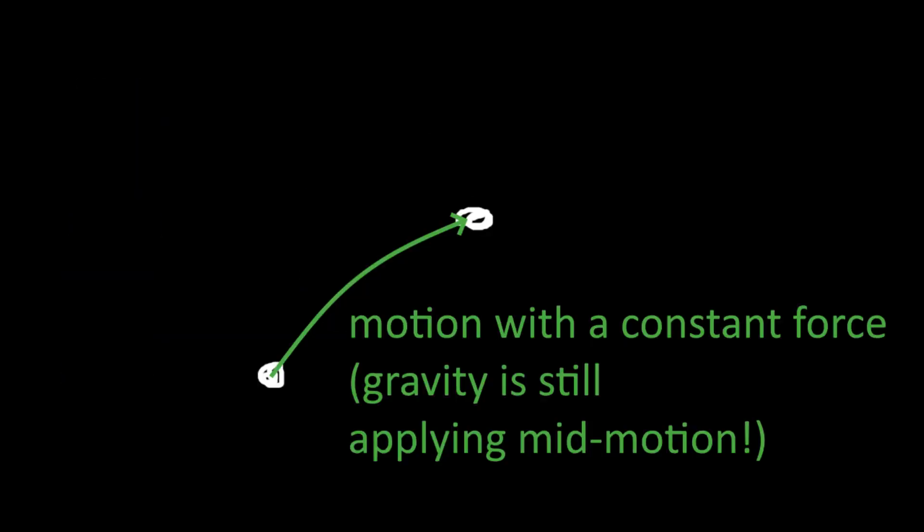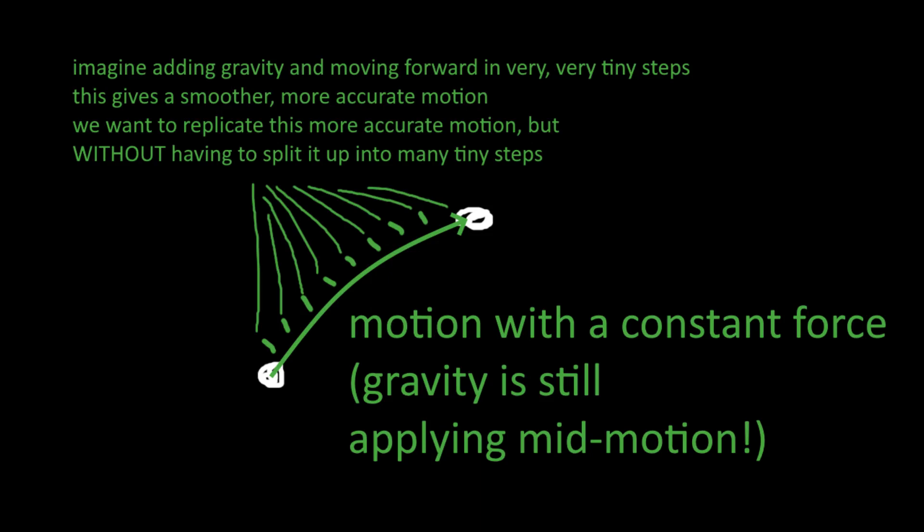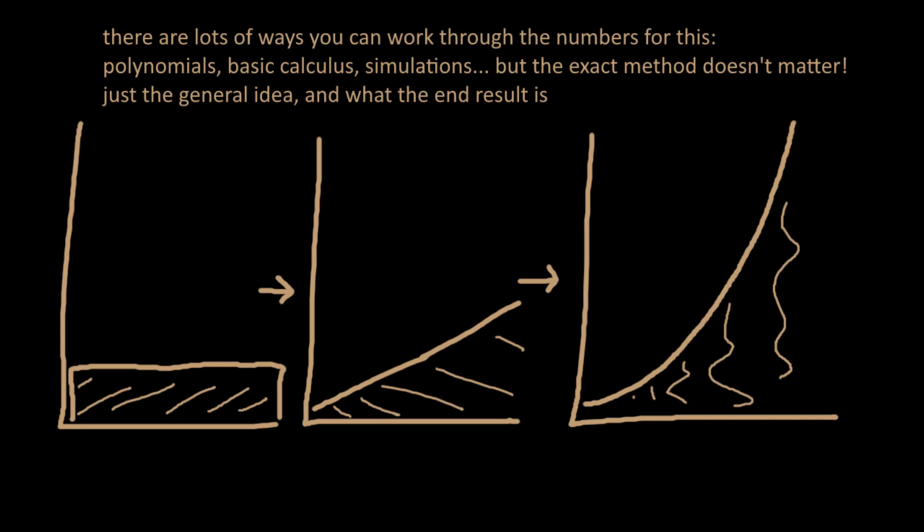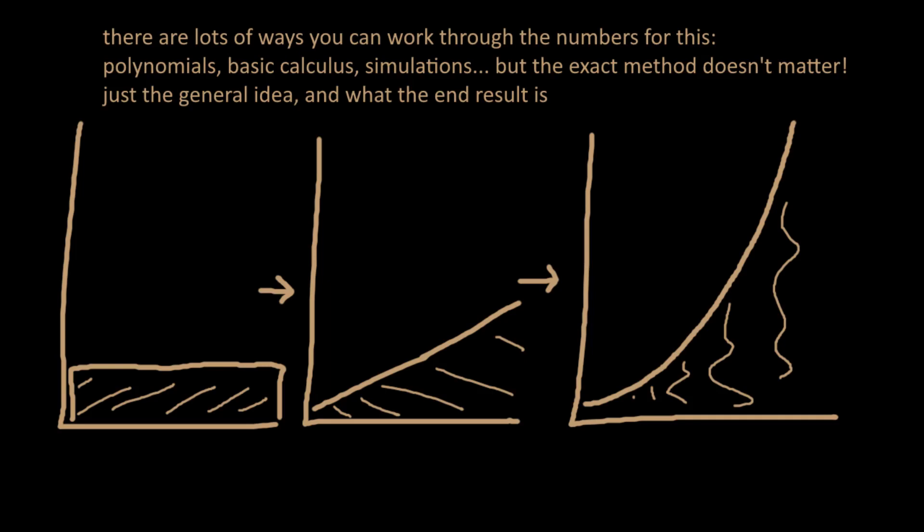So here's what's up. For the motion that happens during a given frame, the effect of the gravity of that frame on the motion of that frame should be distributed across that entire frame. If you run tests or work out the numbers, it turns out that applying half the gravity for the current frame to the current frame's motion works right.